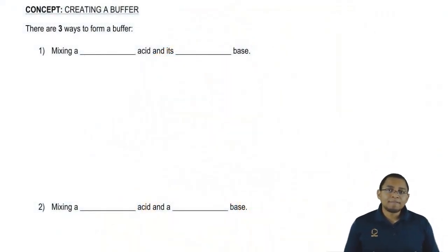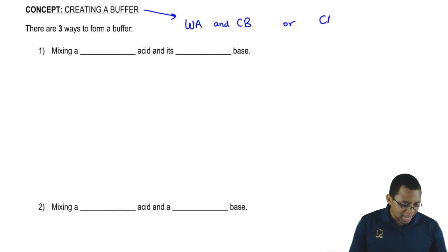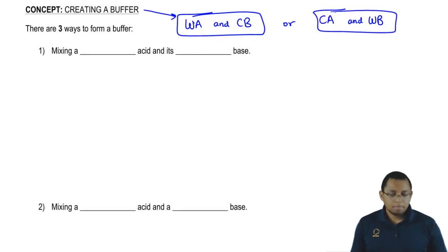We know what a buffer is. A buffer is made up of a weak acid and conjugate base or a conjugate acid and a weak base. That's what a buffer is. But there are three ways to make a buffer and it's going to be important that you recognize these three ways.